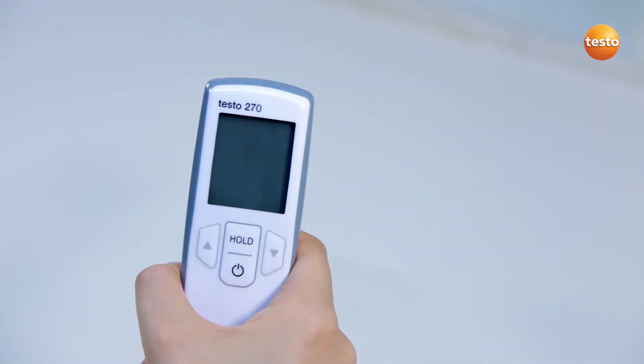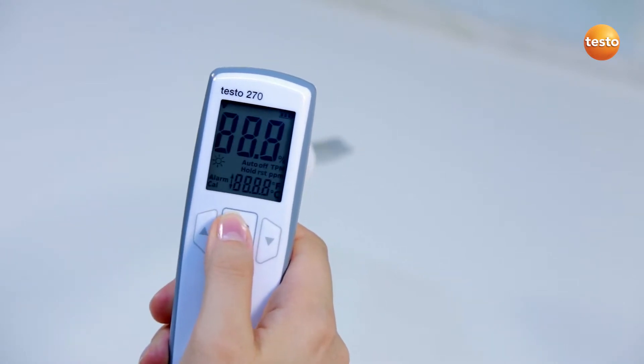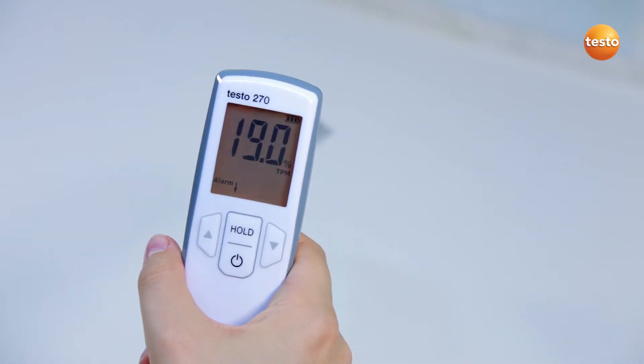In order to configure the Testo 270, I switch it on and immediately press the hold button for 2 seconds to access the configuration menu.